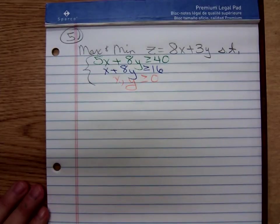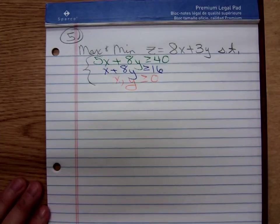We want to maximize and minimize the function z equals 8x plus 3y subject to 5x plus 8y is greater than or equal to 40, x plus 8y is greater than or equal to 16, and x and y are both greater than or equal to 0.